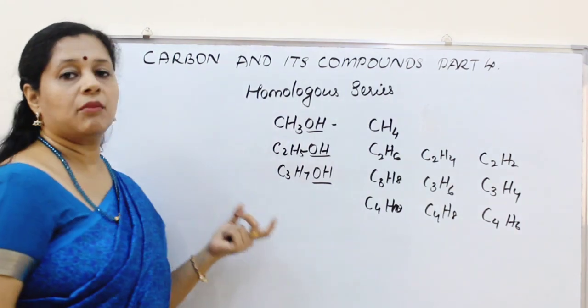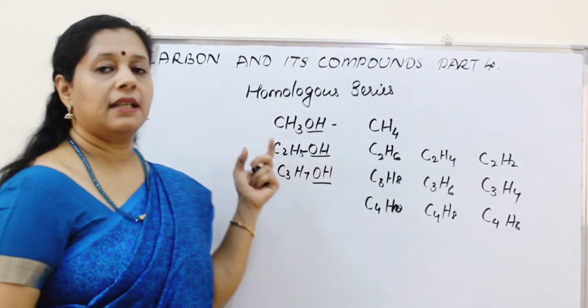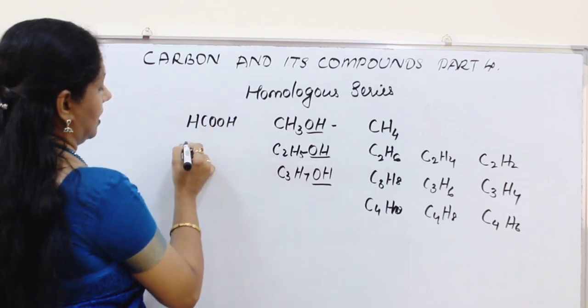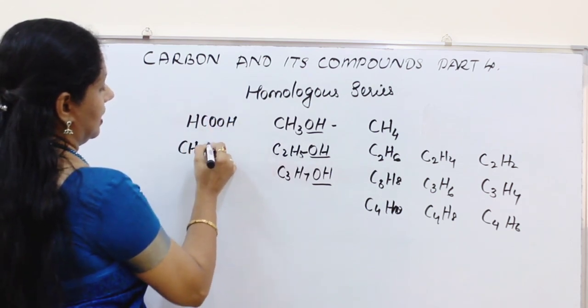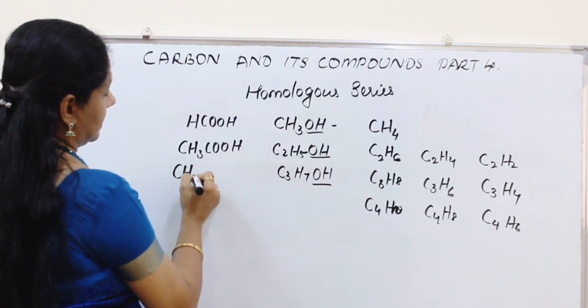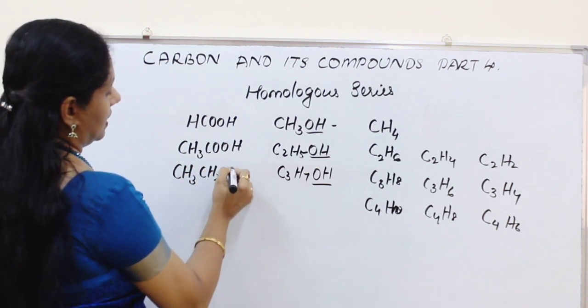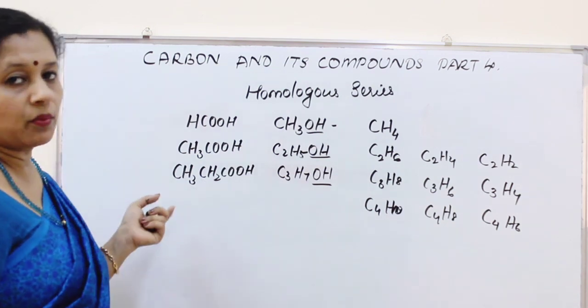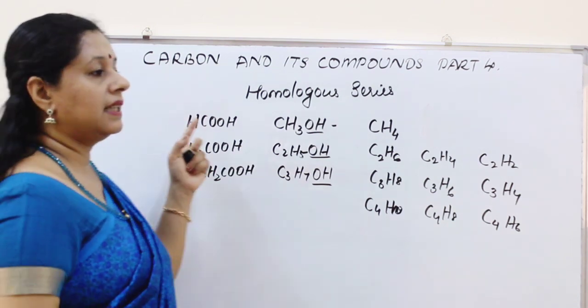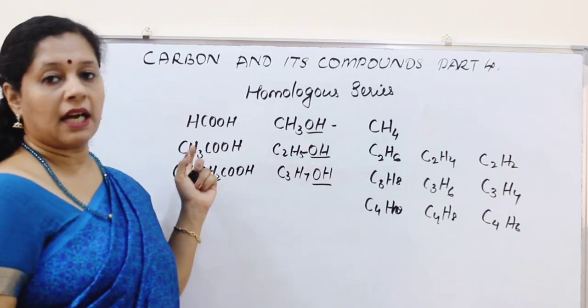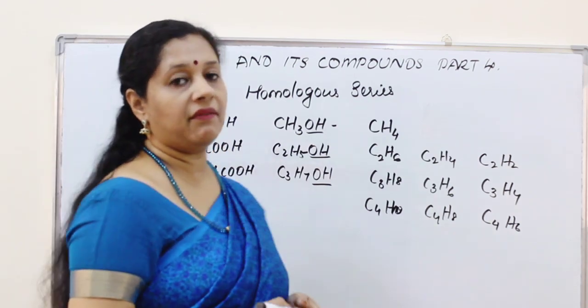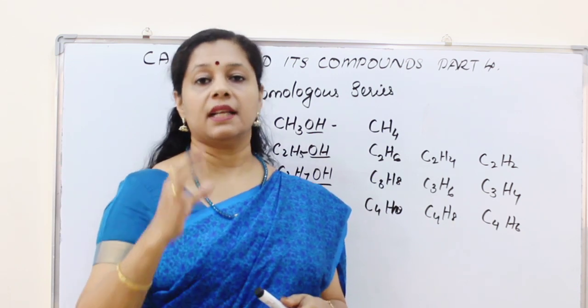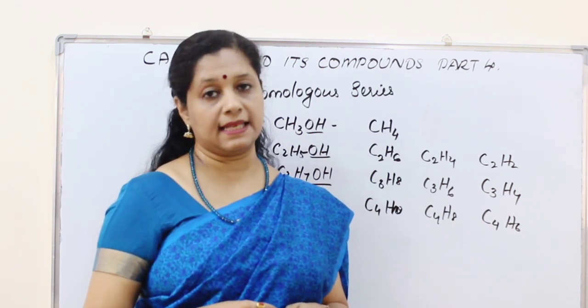Or we can tell about carboxylic acids also. That is methanoic acid CH3COOH, or C2H3COOH this is ethanoic acid, C3H5COOH this is propanoic acid. So like this, so many acids also we can say. Then this is called a carboxylic acid group. The same way we found aldehyde group, ketone group, propanol, butanol, pentanol, hexanol, all these. These are all forming the homologous series.